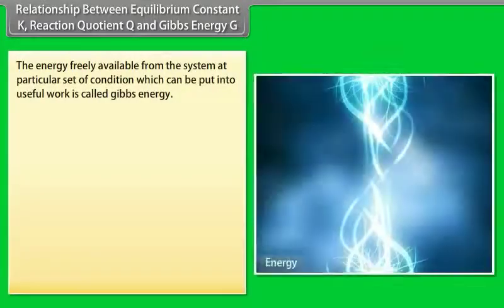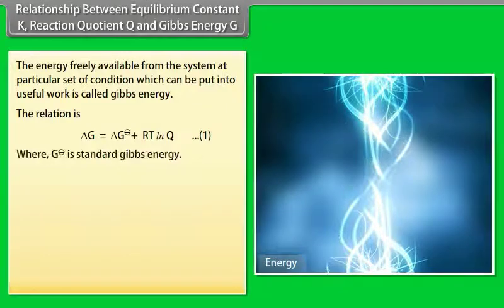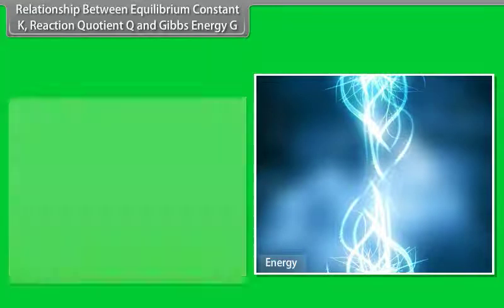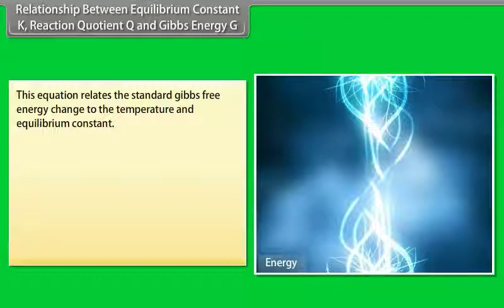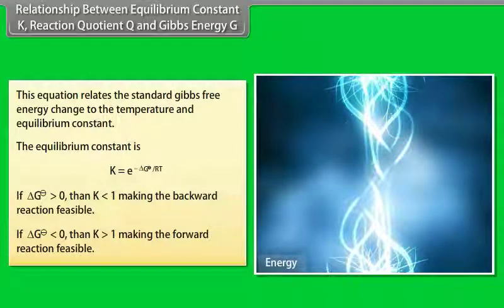Relationship between Equilibrium Constant K, Reaction Quotient Q, and Gibbs Energy G: The energy freely available from the system at a particular set of conditions that can be put into useful work is called Gibbs energy. At equilibrium, Q = K and ΔG = 0. This leads to the equation relating standard Gibbs free energy to temperature and equilibrium constant. If ΔG° > 0, then K < 1, making the backward reaction feasible. If ΔG° < 0, then K > 1, making the forward reaction feasible.